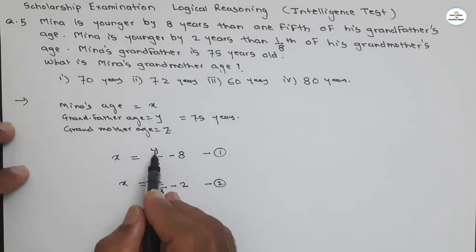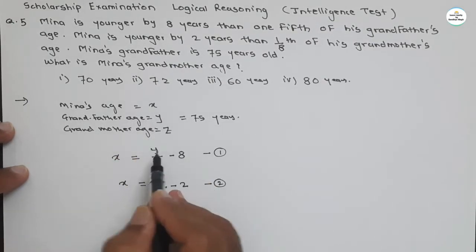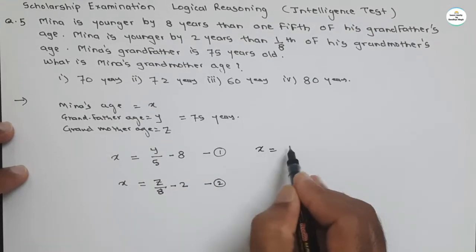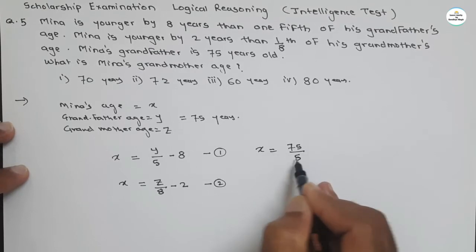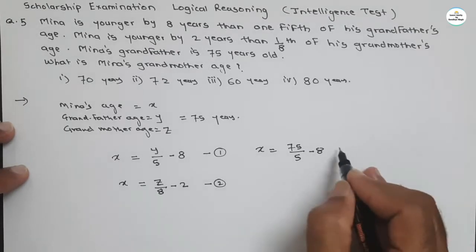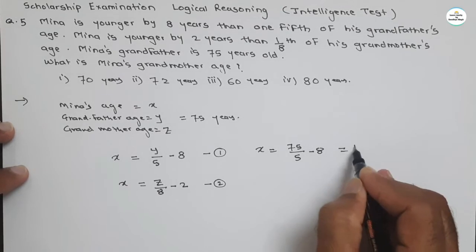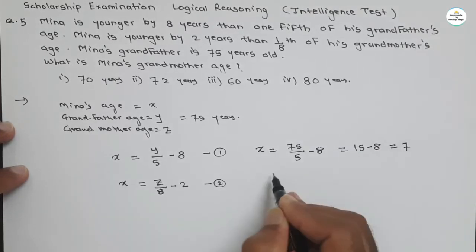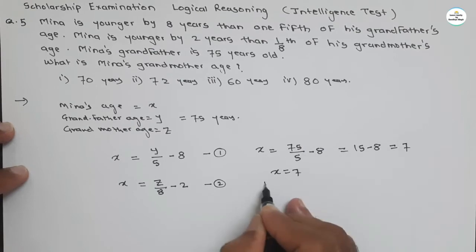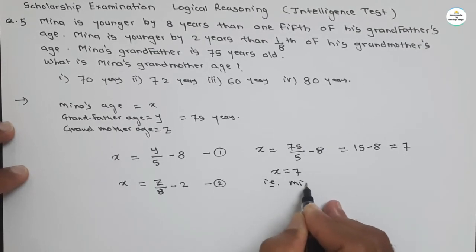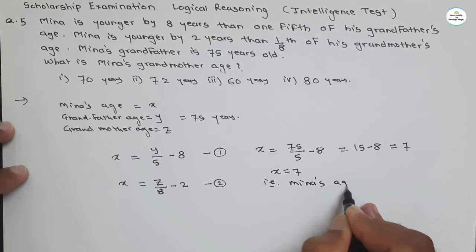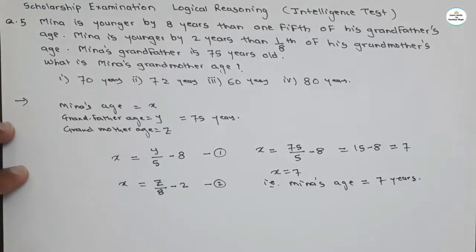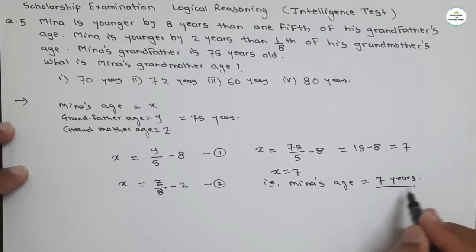Y is given — grandfather's age is 75. So put this 75 in the first equation. We get X equal to 75 divided by five minus eight. Solving this: 75 divided by five is 15, minus eight gives us the value of X as seven. So Meena's age is seven years, because we assumed Meena's age as X, and X equals seven.